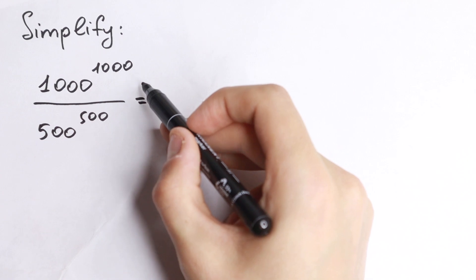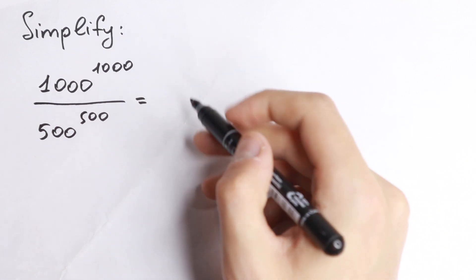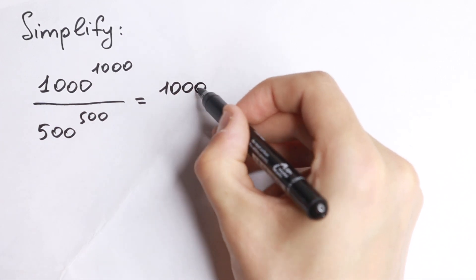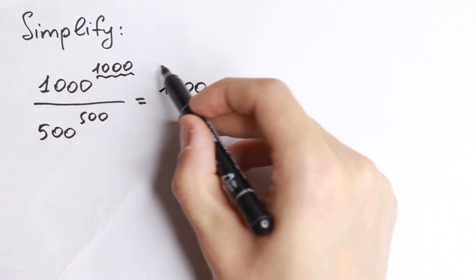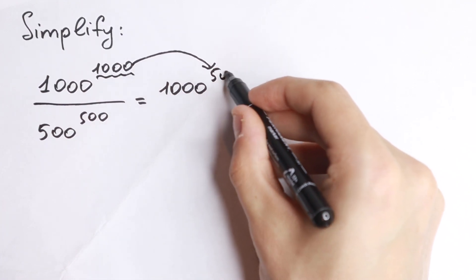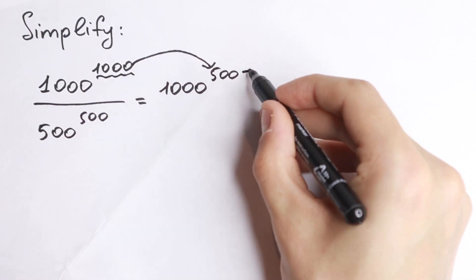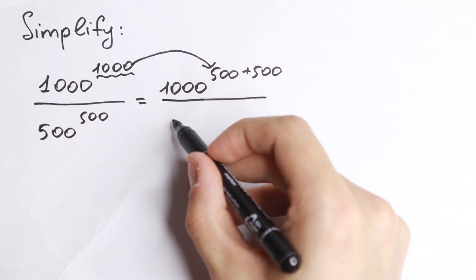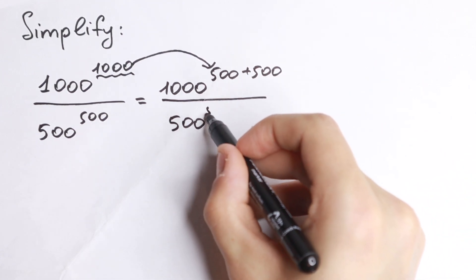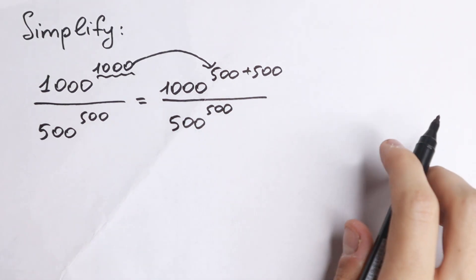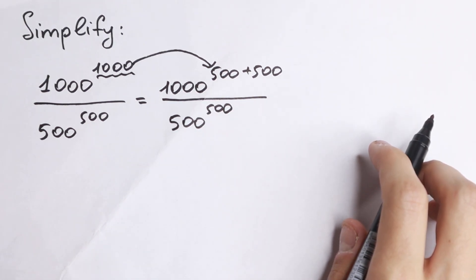At first, let's express 1000 as 500 plus 500. So right here we write not 1000 but 500 plus 500. Nothing changed — 500 dividing by 500 to the power of 500. We just write this 1000 as 500 plus 500.